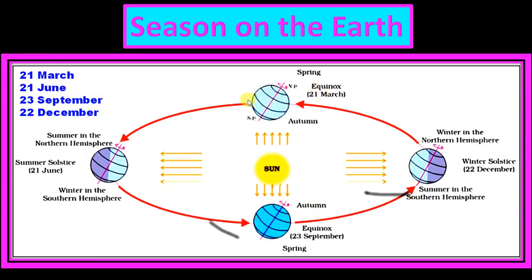On 21st March, sun rays fall on the equator. E for equator, E for equinox, E for equal — meaning day and night will be equal in both hemispheres. This condition is known as equinox.